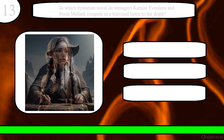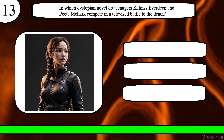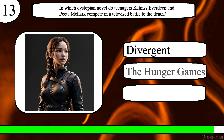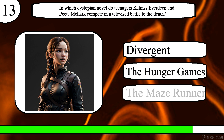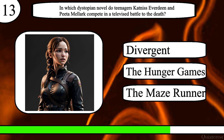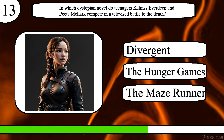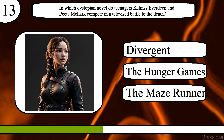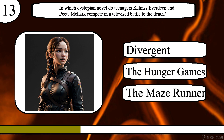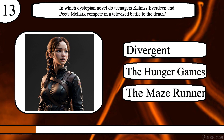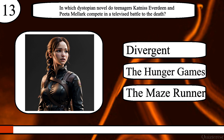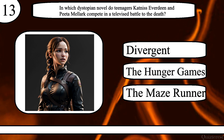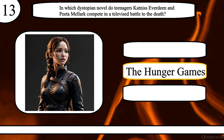Question 13. In which dystopian novel do teenagers Katniss Everdeen and Peeta Mellark compete in a televised battle to the death? Divergent, The Hunger Games, or The Maze Runner? The correct answer is The Hunger Games.